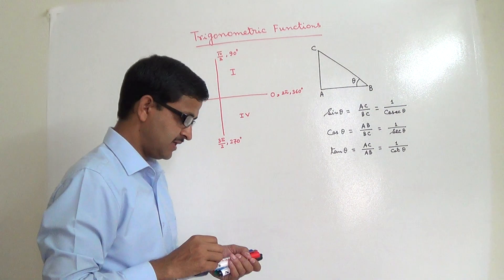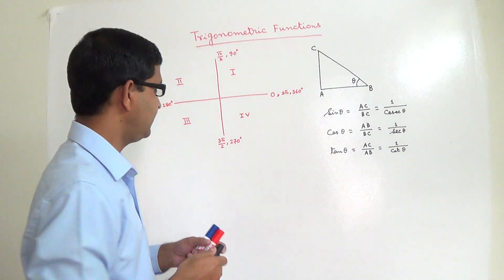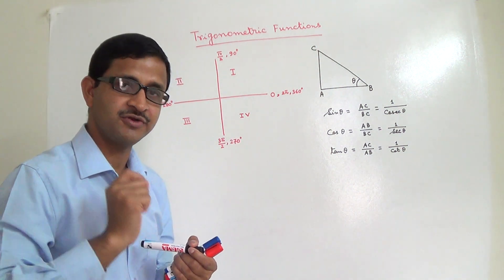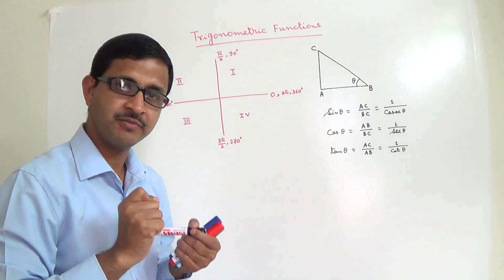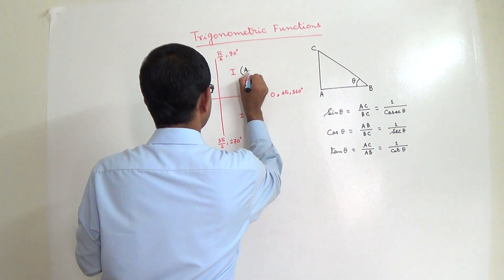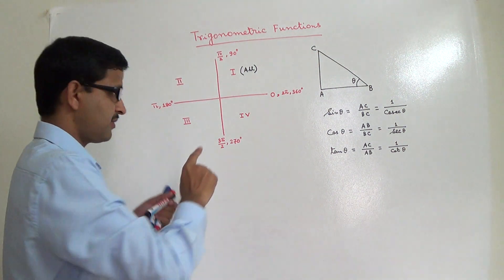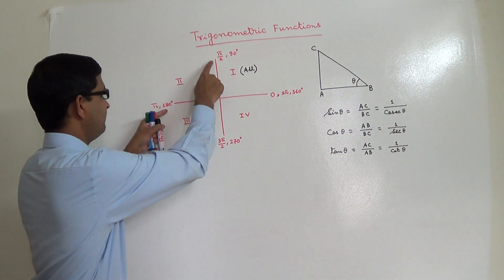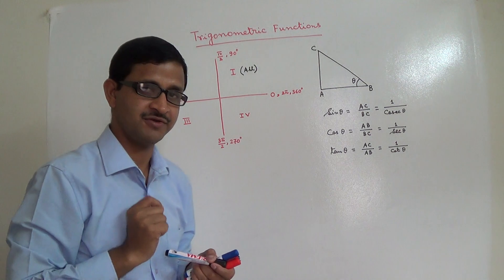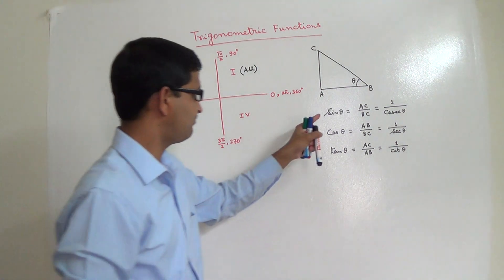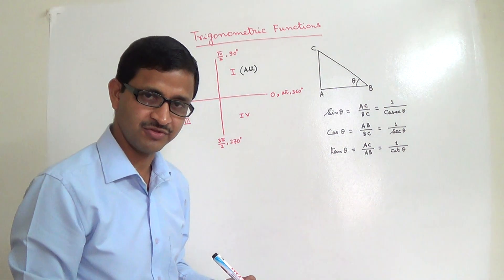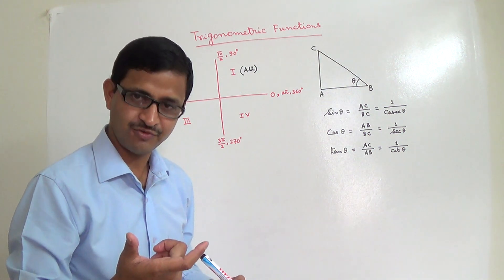There is a convention: any angle in the first quadrant has all trigonometric functions positive. In the second quadrant — for any angle between π/2 and π — only sine is positive, and since sine is positive, cosec is also positive, because the reciprocal of a positive number is always positive.